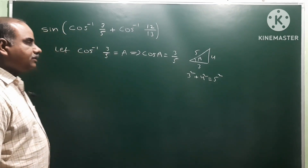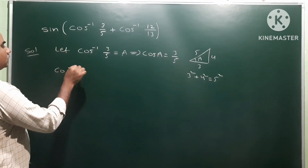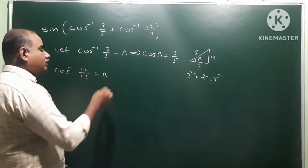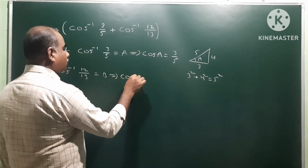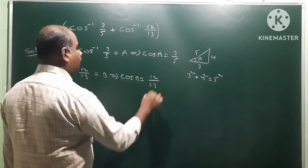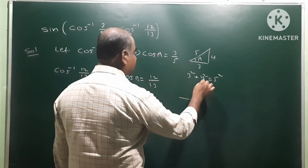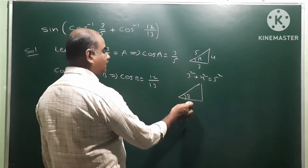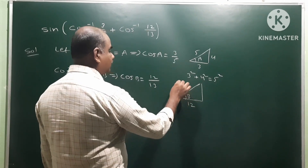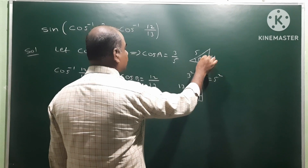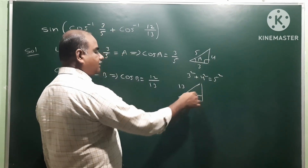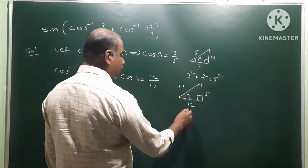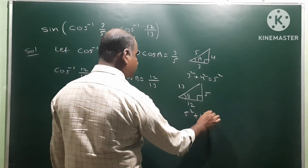For the second one, cos inverse 12 by 13 is taken as b. Take the right angle triangle where the angle is b. Cos means adjacent side by hypotenuse — this is the adjacent side, this is the hypotenuse opposite to the right angle, and the opposite side becomes 5, because these are Pythagorean triples: 5 squared plus 12 squared is equal to 13 squared.